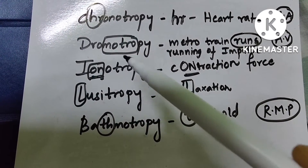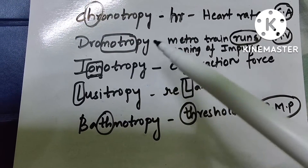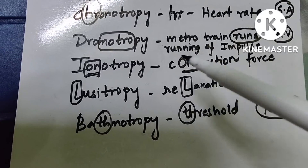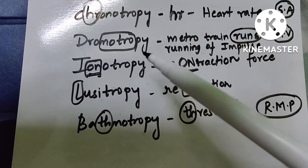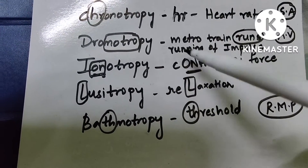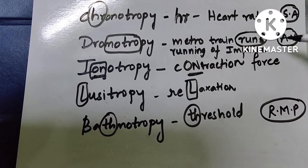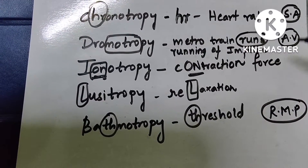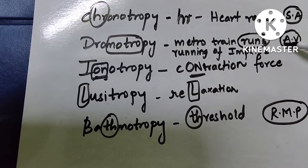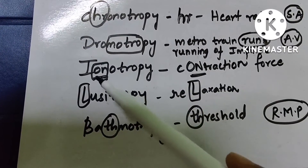Coming to dromotropy — the mnemonic here is 'metro.' Remember it as metro: a metro train runs, so it is related to the running of the impulse of the heart. The signals generate in the SA node and they run through the AV node to the ventricles. So running of the impulse is related to the AV node — dromotropy is related to the AV node.